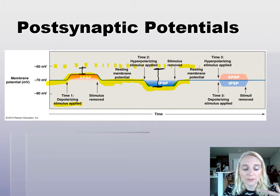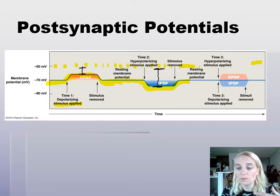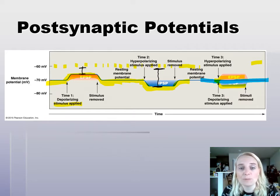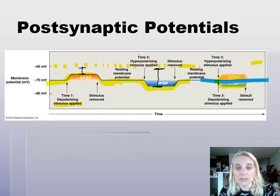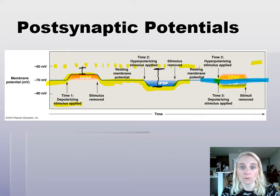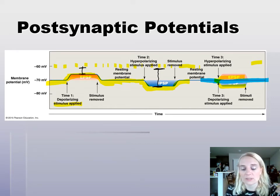If at a third time we get both an EPSP and an IPSP happening at the same time, the resting potential just stays because they cancel each other out. If we have an EPSP of 5 millivolts and at the same time an IPSP of 5 millivolts, starting at negative 70, one's going to want to depolarize to negative 65 and one's going to want to hyperpolarize to negative 75 — they cancel each other out, and we're neither closer nor further away from threshold. So it's kind of a wash.